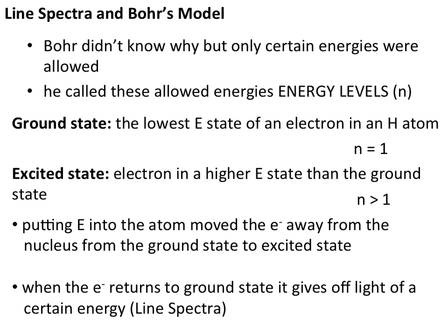Bohr called the allowed energies associated with an electron's position 'energy levels.' The ground state is the lowest state of an electron in a hydrogen atom — n equals 1, the closest orbit to the nucleus. An excited state is when an electron is in a higher energy level than the ground state. If an electron absorbs energy and jumps up to a higher level, it is said to be in the excited state.